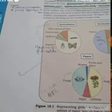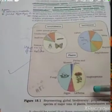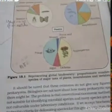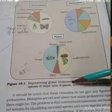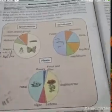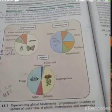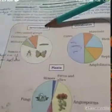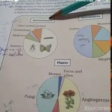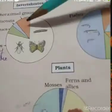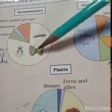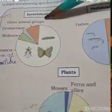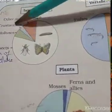What is it representing? It is representing a global biodiversity proportionate number of species of large taxa of plants, invertebrates, and vertebrates. Among these, the very first we have invertebrates, which have the largest amount. The largest proportion is insects, then other animals, then mollusks, and then crustaceans.